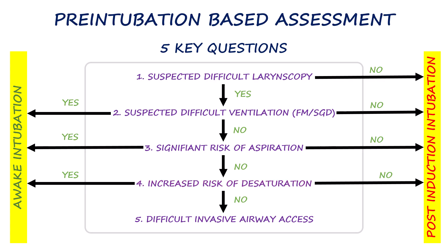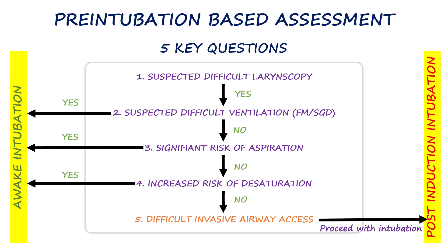Finally, we anticipate potential difficulty in accessing invasive airways such as cricothyrotomy, and prepare the necessary equipment and strategies to ensure rapid access if standard airway management fails. Only after this assessment should we proceed with intubation following induction of general anesthesia. If invasive airway access is deemed difficult, we must again consider awake intubation. Any single factor, or a combination of factors, may be significant enough to make awake intubation the safer option.